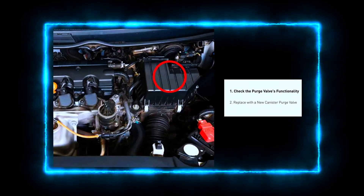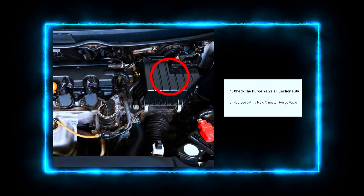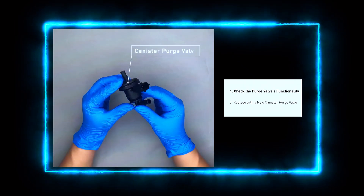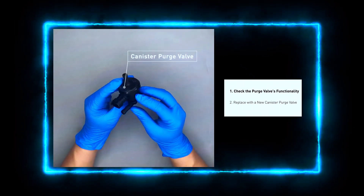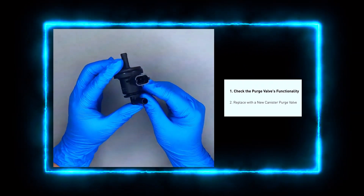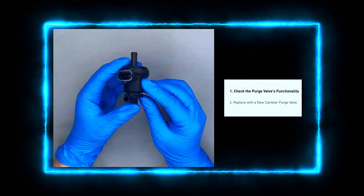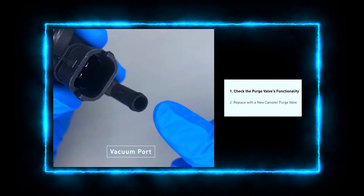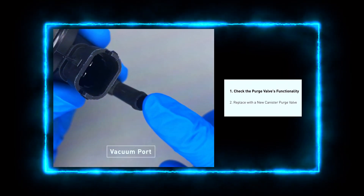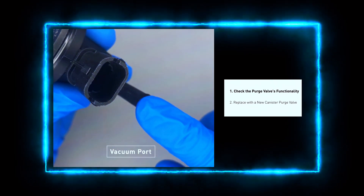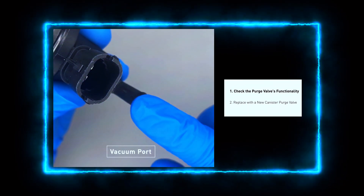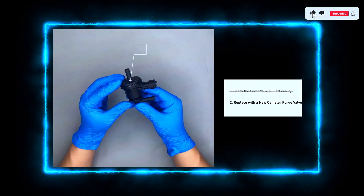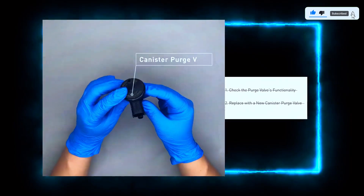Step two: inspect the evap purge control valve. The location can vary by car model, so consult your repair manual or do a quick web search to find it. With the engine running, carefully place your finger over the vacuum hose connected to the valve. You should feel a slight suction — if not, the valve might be stuck and need replacing.